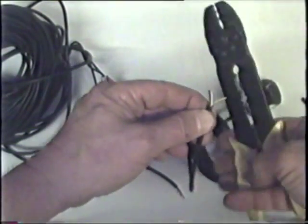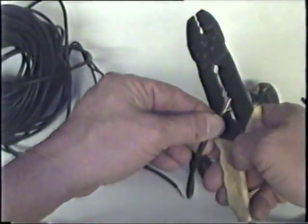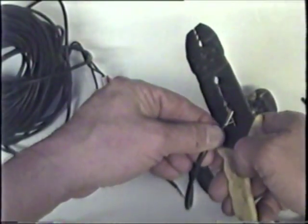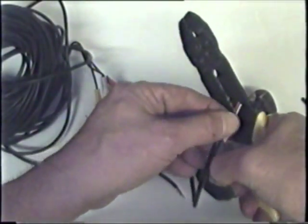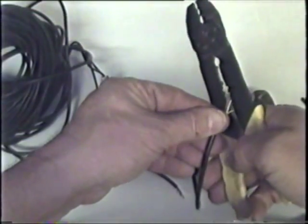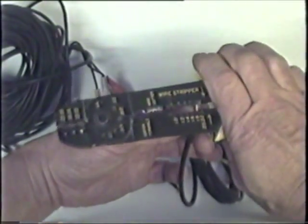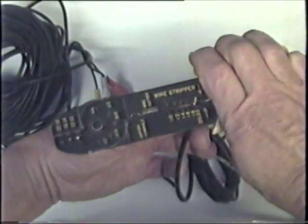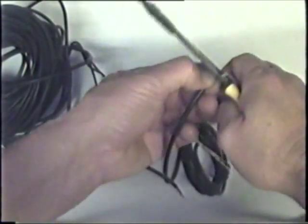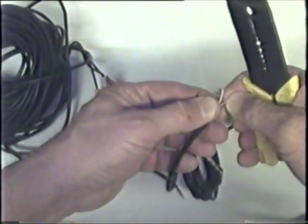You can also use this other kind of wire stripper to strip off the insulation from the smaller wires. These are a little more difficult to use, though. You might end up cutting that small wire, and then you have to start all over.